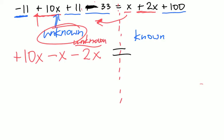So instead of a plus 2x on this side, it becomes a minus 2x on the other side. So now I've collected all my x values, all my unknown values.